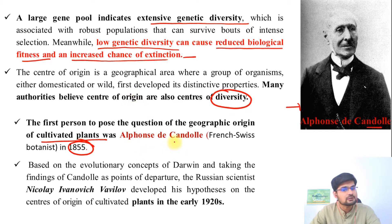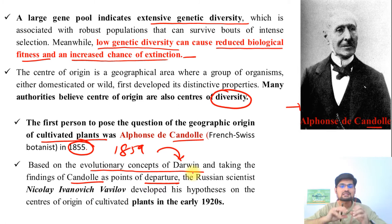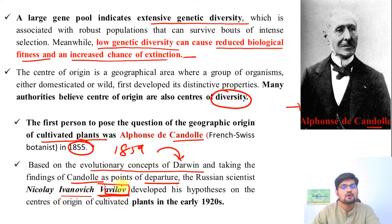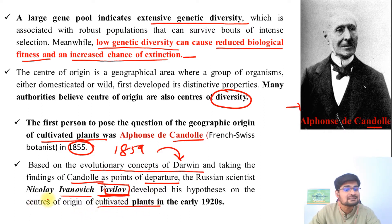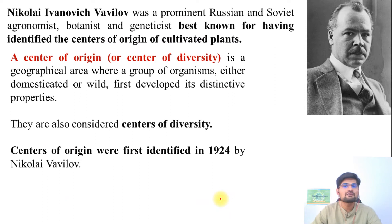Many authorities believe that centers of origin are also centers of diversity at the same time. After de Candol, in 1859, Darwin came and revolutionized this thought process. Based on Darwin's evolutionary concept and taking de Candol's findings as points of departure, Russian scientist Nikolai Ivanovich Vavilov developed his hypothesis on the origin of cultivated plants — the centers of origin — in the early 1920s. It is only about a hundred years old as a concept.